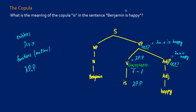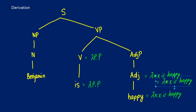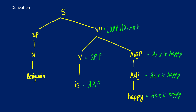Let's see this in action in terms of our derivation. For 'Benjamin is happy': 'is' is lambda p dot p, which passes up the tree. Lambda p dot p applied to 'happy' — which is lambda x dot x is happy — gives us lambda x dot x is happy. For the VP, we're applying our function lambda x dot x is happy to our predicate lambda p dot p, and every instance of p we replace with lambda x dot x is happy, so what we get in the end is lambda x dot x is happy, which is exactly what we want.